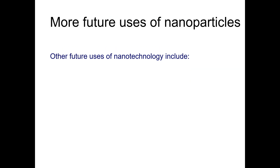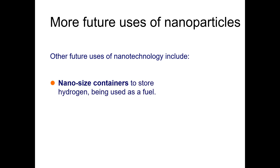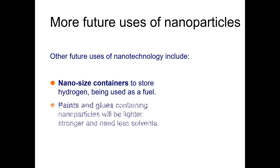We can have nano solar cells to trap solar energy. These we can do with nanoscience and nanotechnology. Other future uses of nanotechnology include nanoscale containers to store hydrogen being used as a fuel. We can design nanoscale containers to store hydrogen. Similarly, we can have paints and coatings containing nanoparticles, which will be lighter, stronger, and need less material.